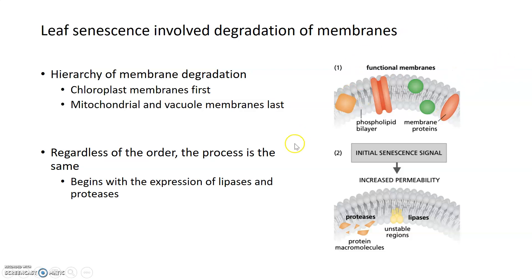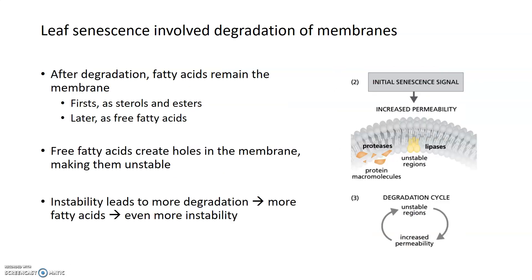You have a functional membrane which receives the initial senescence signal and then begins to express lipases, which degrade the phospholipids of the membrane, and proteases which start to degrade the proteins embedded within that membrane as well. That leads to unstable regions within the membrane, as well as an increase in selective permeability.